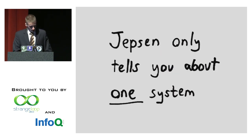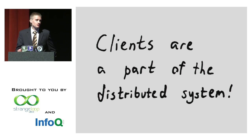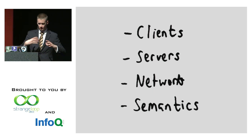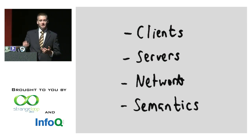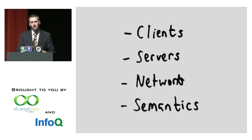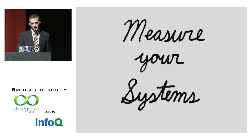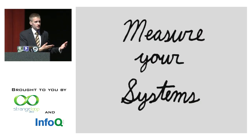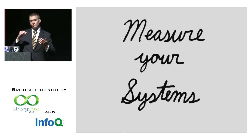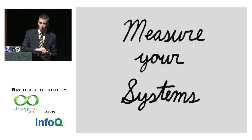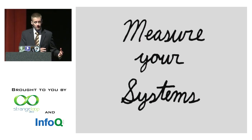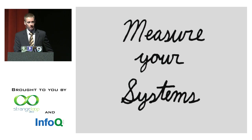To recap, Jepsen tells you about one system — and by system I include the clients, application semantics, network, failure topology, servers, and versions, because all of this stuff interacts. Individual Jepsen runs of the same software can vary greatly because you might hit a particular timing abnormality. So I can't tell you about your systems. Don't take these results to mean Kafka's bad or Cassandra's bad — instead, here's a particular interesting way a system can fall apart, and you can use these same techniques to measure your own systems.